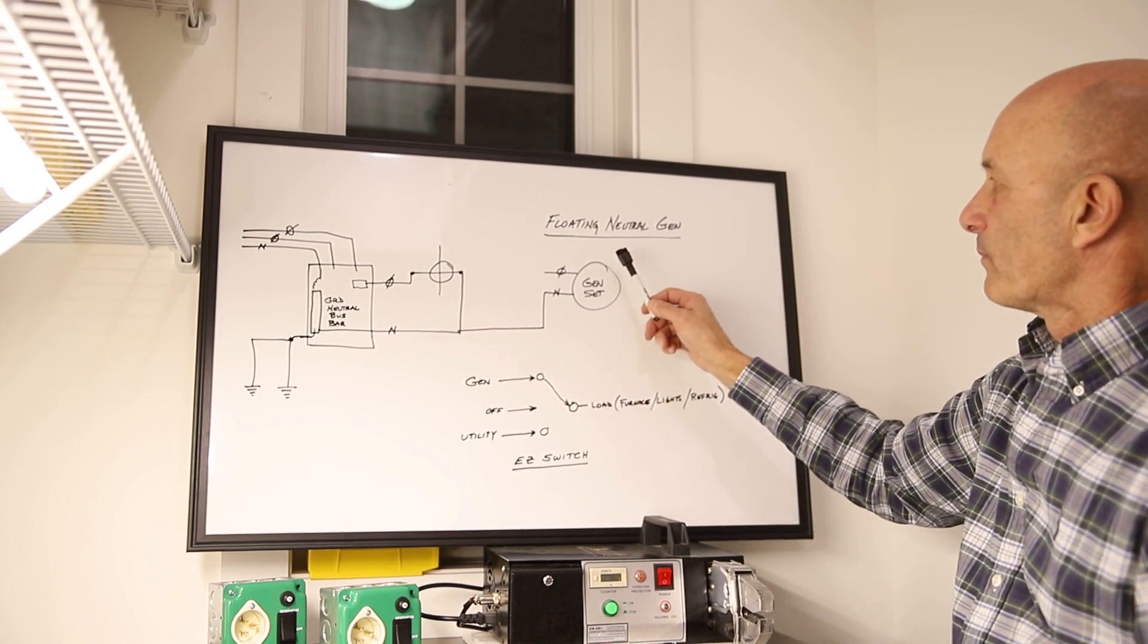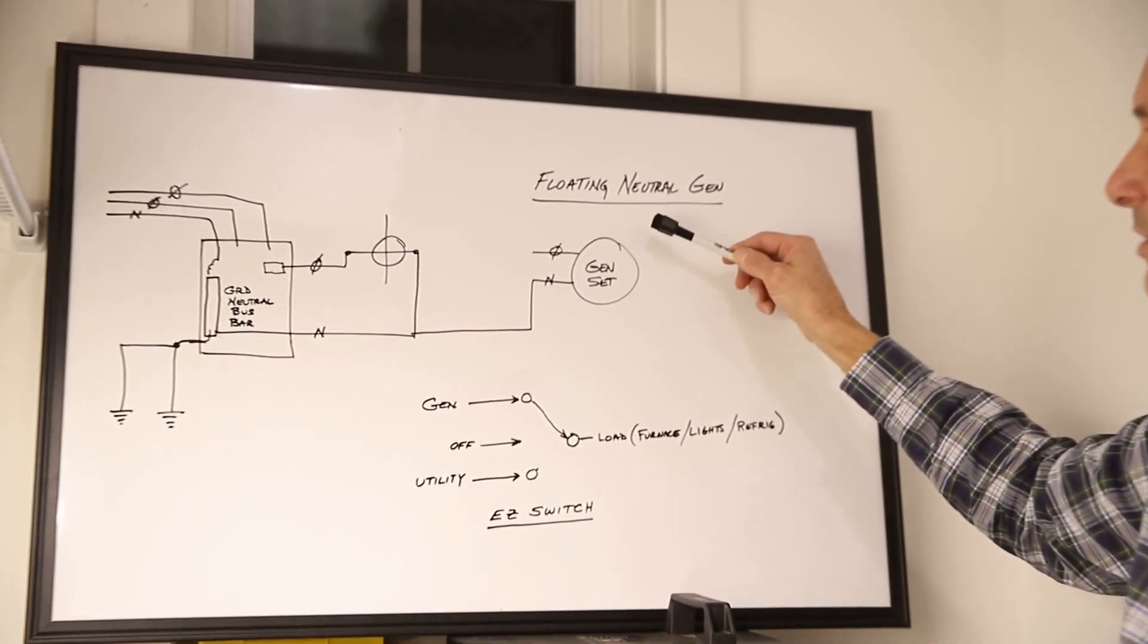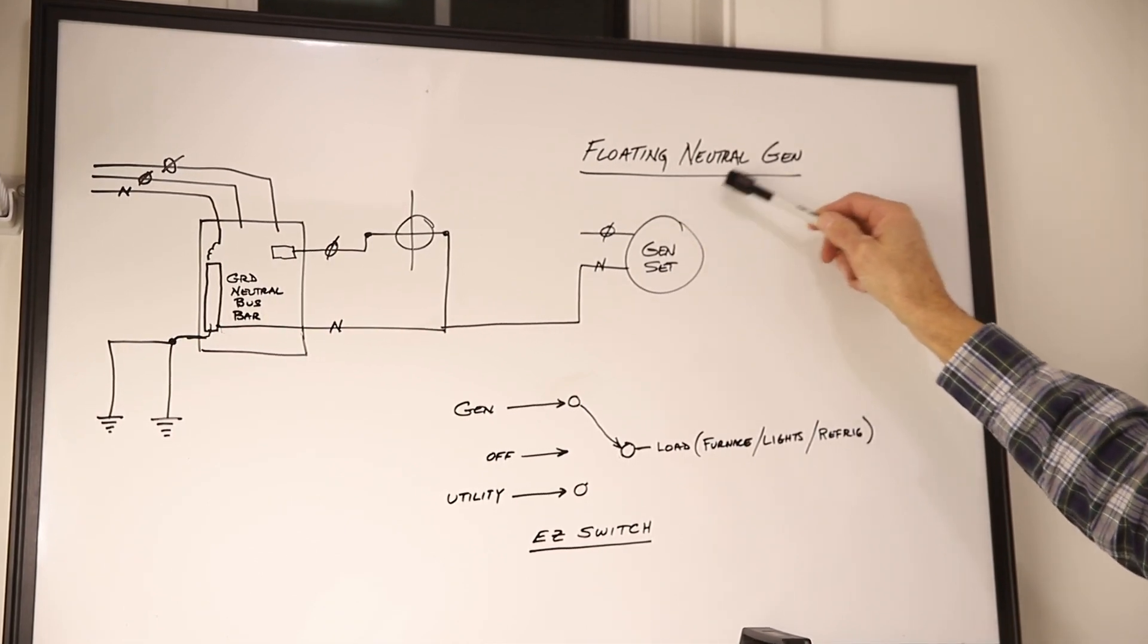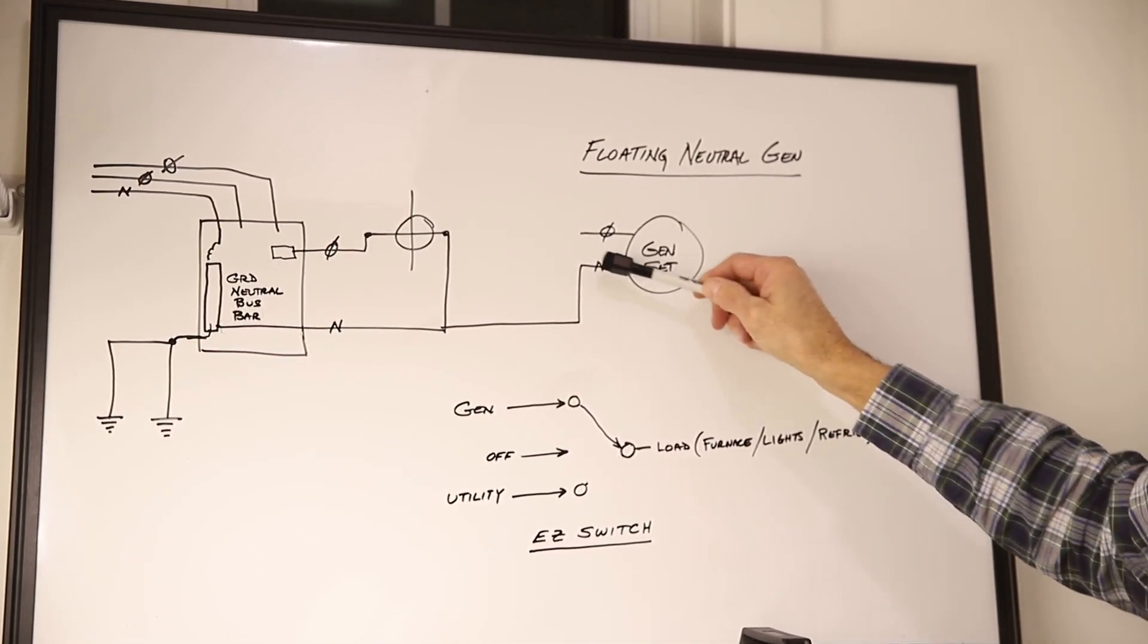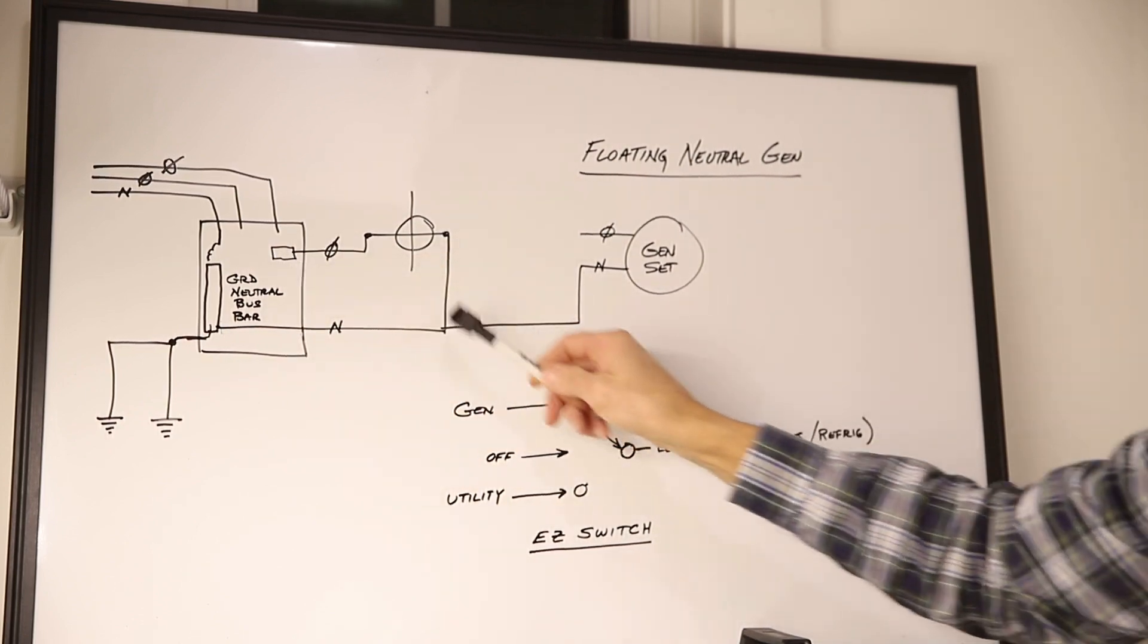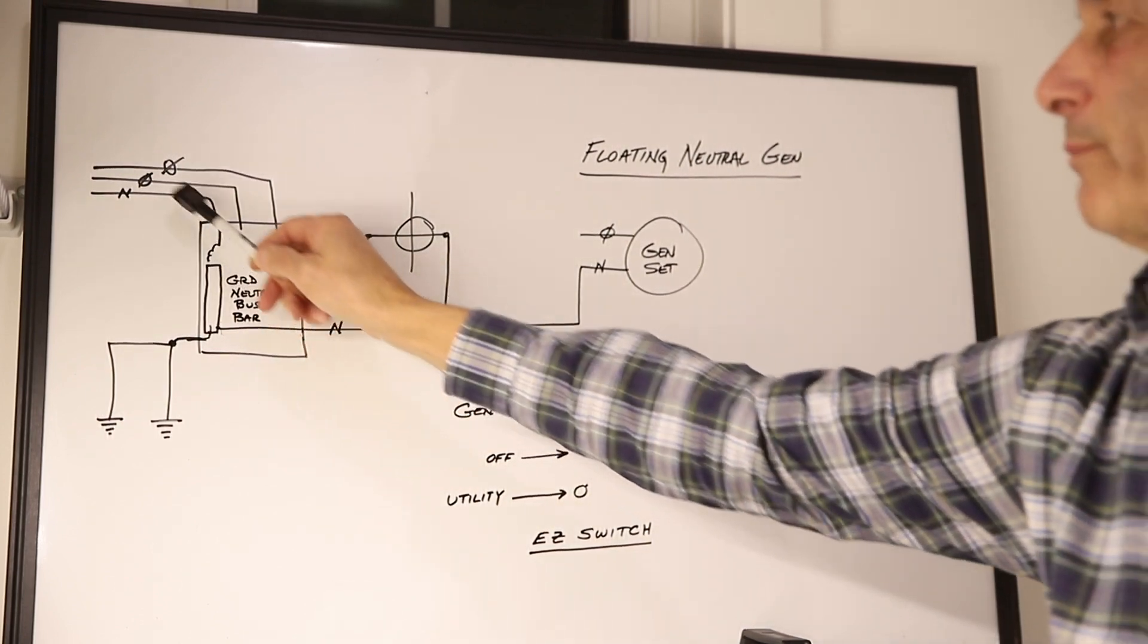Now, real quick, a lot of times people send us a note and say, how come in the case of a floating neutral generator, the neutral is connected to the other neutral on the house? How come it doesn't back feed up to the street?